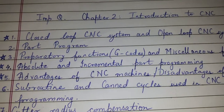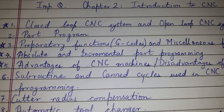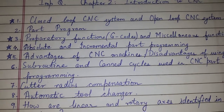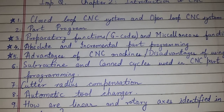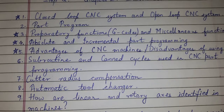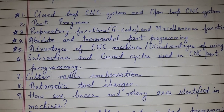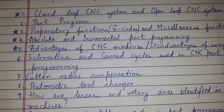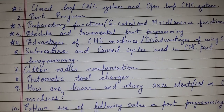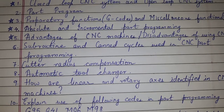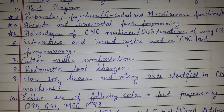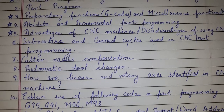Friends, today's topic of discussion is important questions from Chapter 2: Introduction to CNC. The theory part can come for 8 to 20 marks. The questions include closed-loop CNC system and open-loop CNC system, part programming, preparatory function G-code, miscellaneous function M-code, absolute and incremental part programming, advantages and disadvantages of CNC machines.